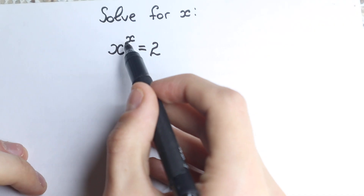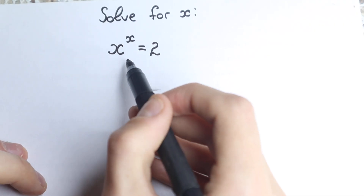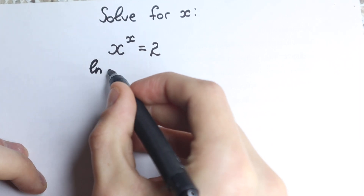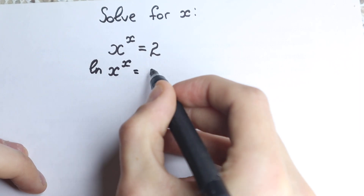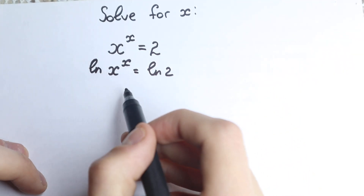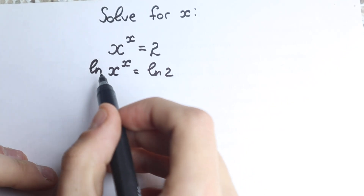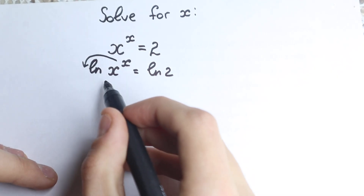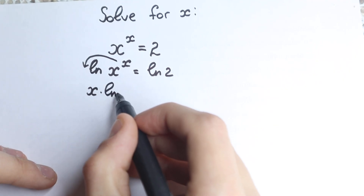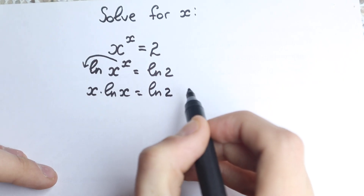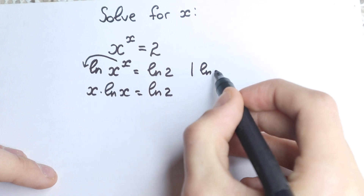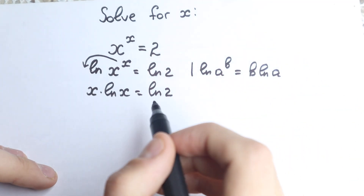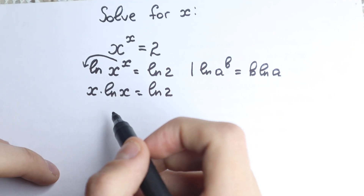First of all, every time when you have a power or an exponent — doesn't matter if you have a variable — you need to know about the natural log. In our case, let's apply natural log on both sides: ln(x^x) = ln(2). Now we apply the log power rule, which says ln(a^b) = b·ln(a), so this x jumps down and we get x·ln(x) = ln(2). This is our first really important trick.